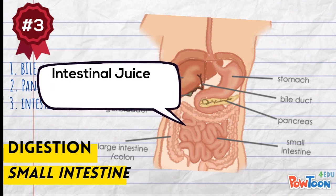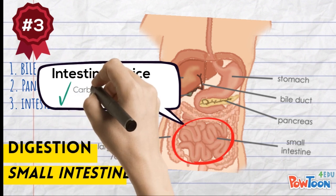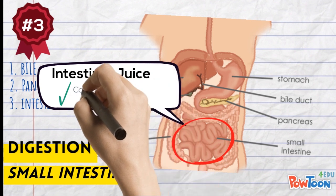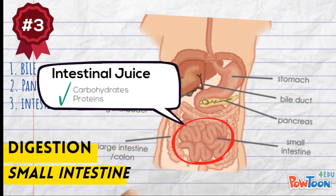The last one is intestinal juice, secreted by the wall of the small intestine. It contains enzymes that can digest carbohydrates and proteins only — no fats are digested by the intestinal juice.